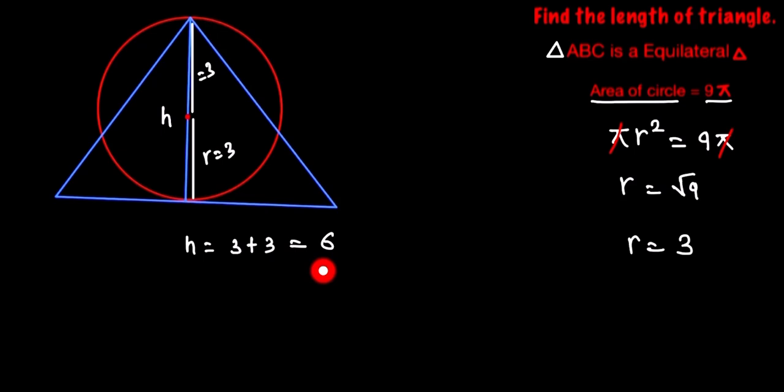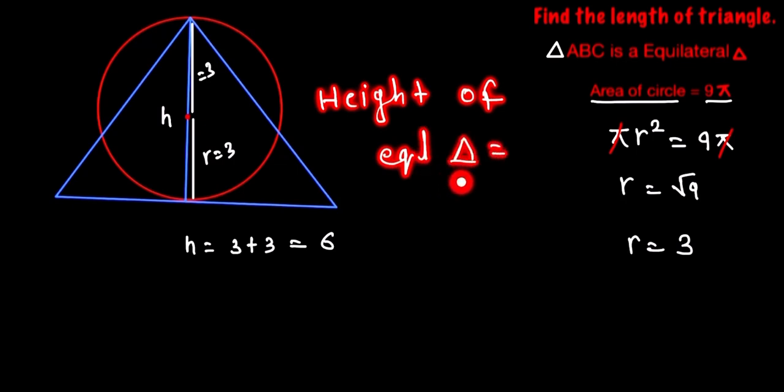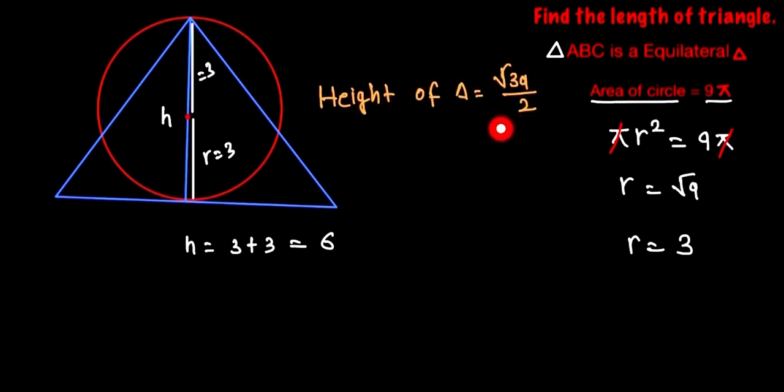So now we use the height of the equilateral triangle. The height of the equilateral triangle is equal to √3a/2. So here, the height of the triangle is 6.